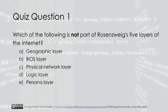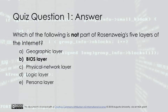Quiz question one: Which of the following is not part of Rosenzweig's five layers of the internet? A) Geographic layer, B) BIOS layer, C) Physical network layer, D) Logic layer, E) Persona layer. The answer is B) BIOS layer.